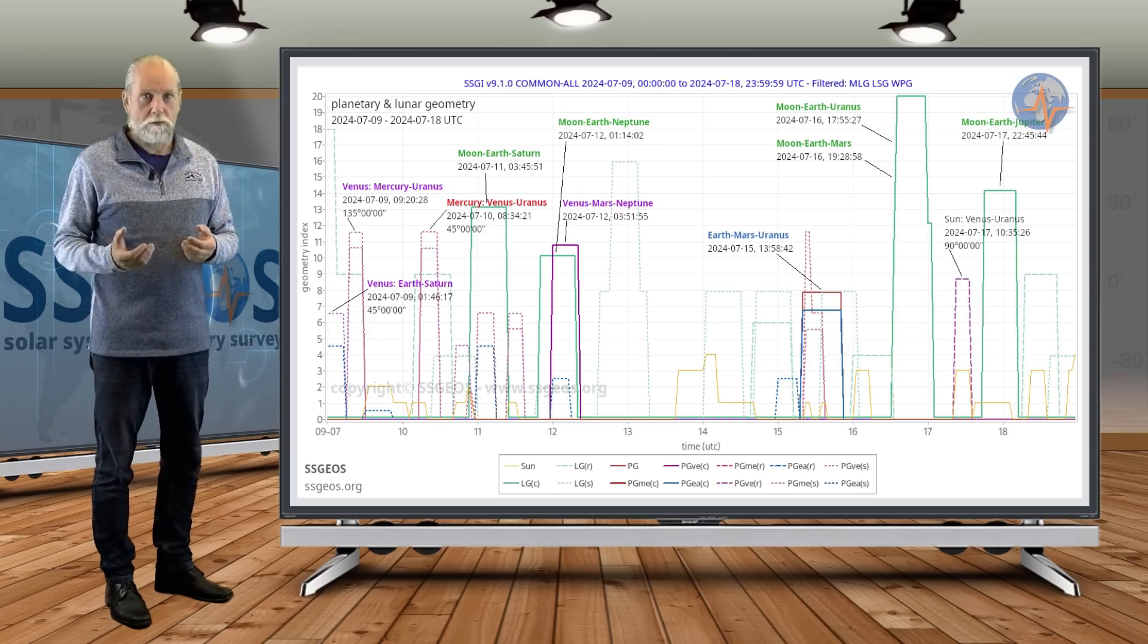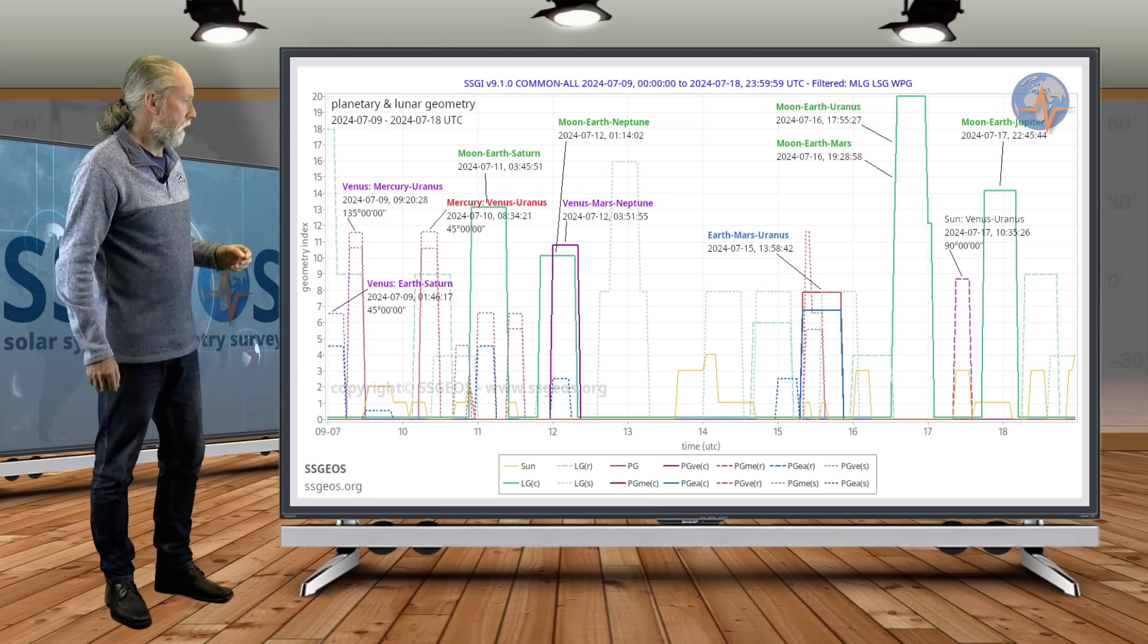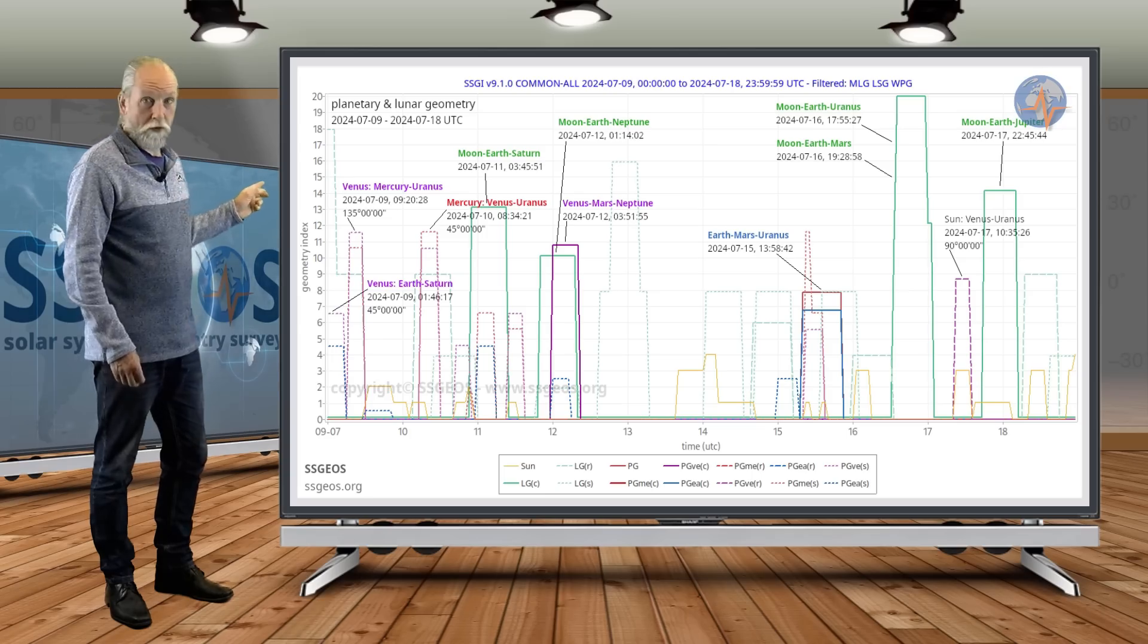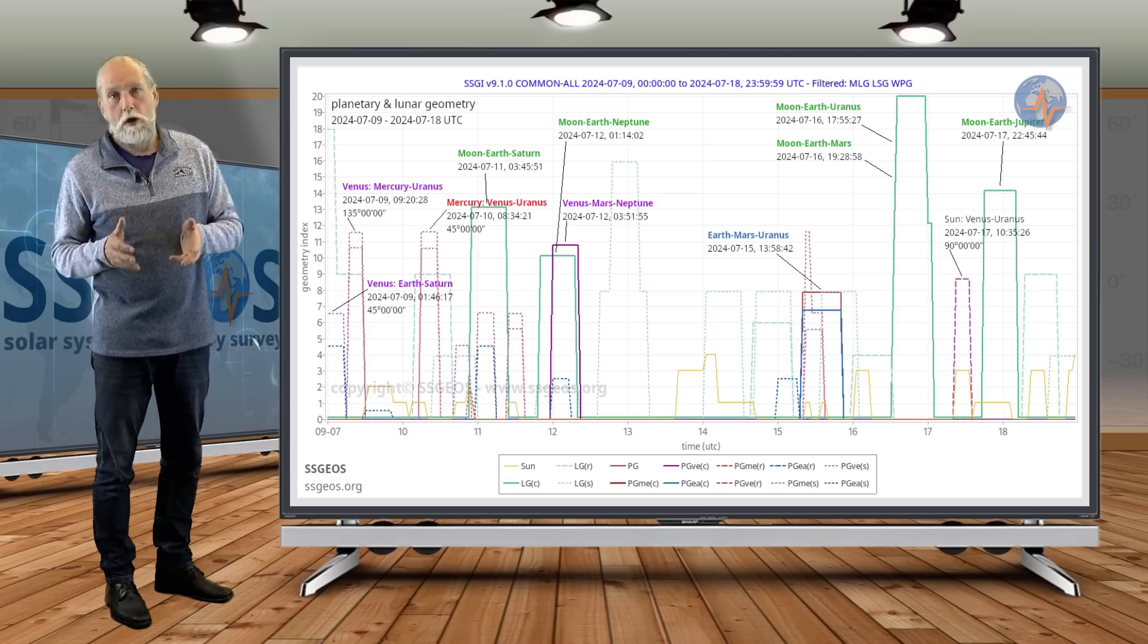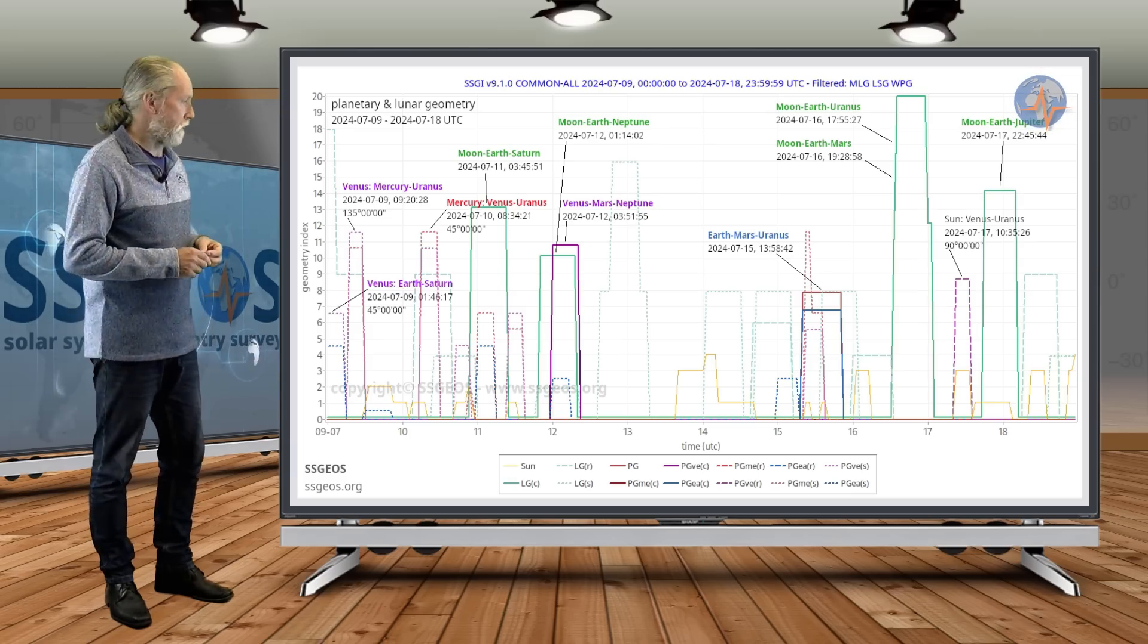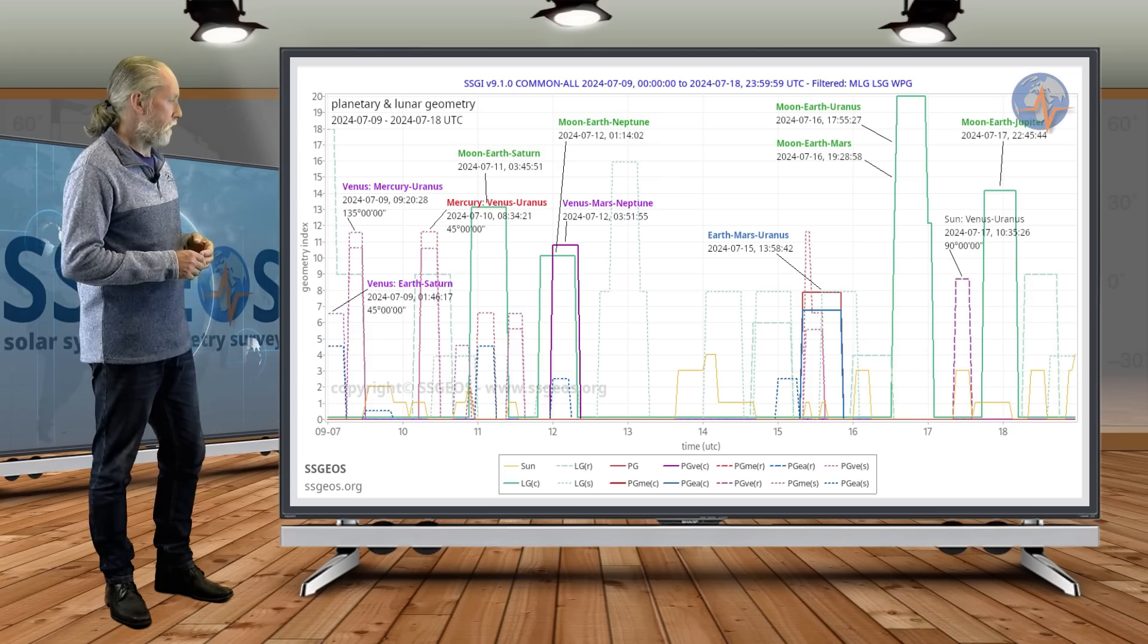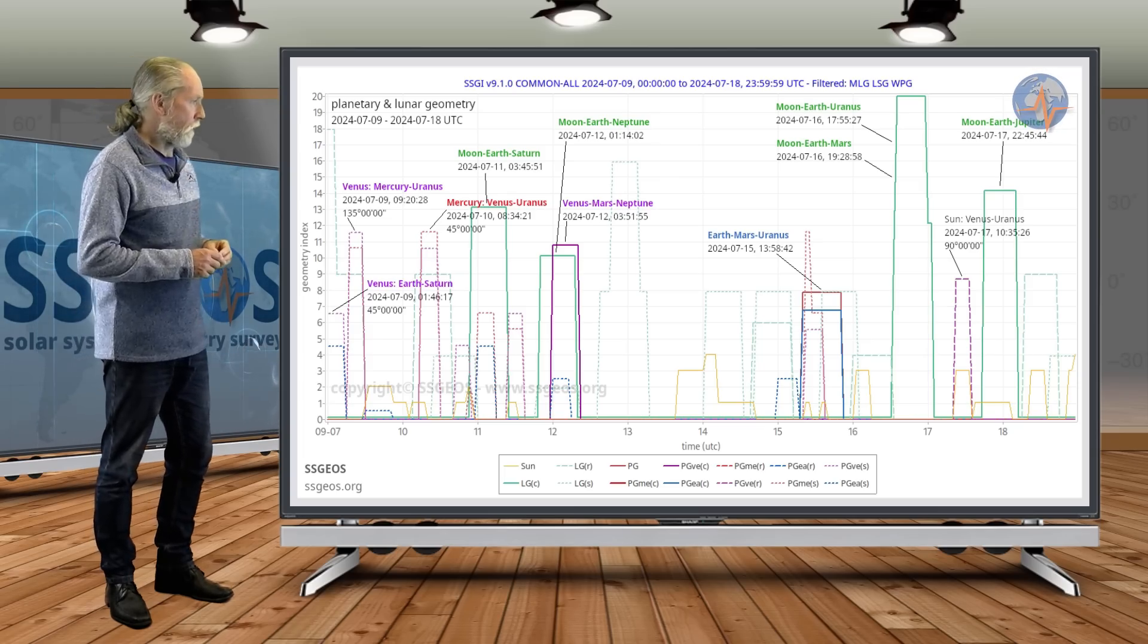So we can see some seismic increase following that lunar geometry that could be on the 18th or 19th. It may not be all that much, but again, be on extra alert following that lunar geometry, especially because Jupiter is the largest planet. We've recently seen the 7.2 in Peru that followed a lunar conjunction with Saturn. So Jupiter and Saturn should not be underestimated with the lunar geometry.